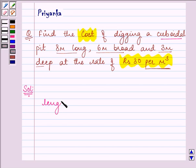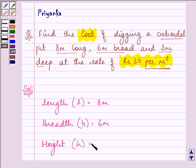Here, the length is given to us as 8 meters, breadth is given to us as 6 meters, whereas the height is given to us as 3 meters.